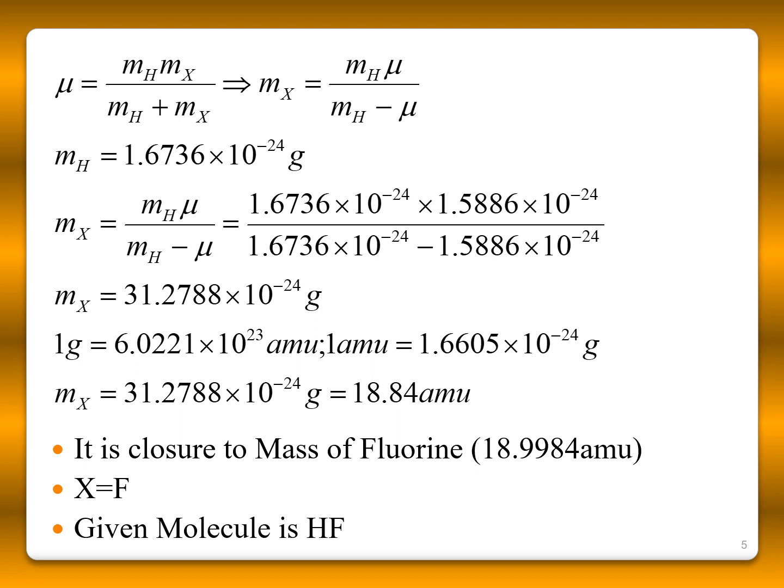Now, you substitute the value of mass of hydrogen and the reduced mass value, then we can arrive as unknown mass, the mass of the unknown atom is 31.2788 times 10 to the power minus 24 grams.